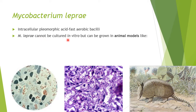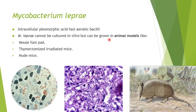Mycobacterium leprae cannot be cultured in vitro because it cannot survive in any outside media. It should be cultured only in vivo, and can be grown only in animal models like mouse footpad, thymectomized mice, iridectomized mice, nude mice, and the nine-banded armadillo. M. leprae is a case of subtractive genetics — it has evolved and lost a multitude of important genes, resulting in minimal cellular machinery, making it an obligate intracellular bacteria.